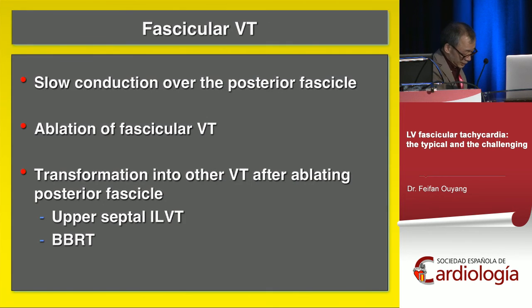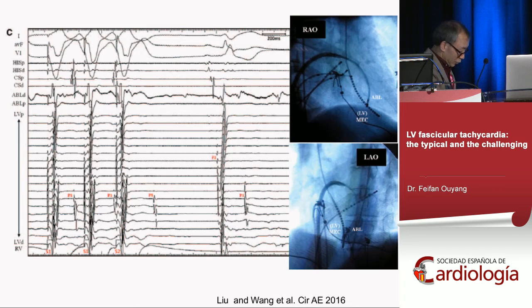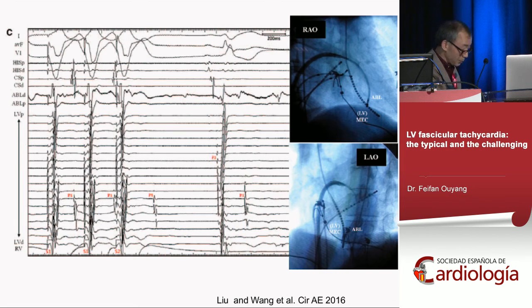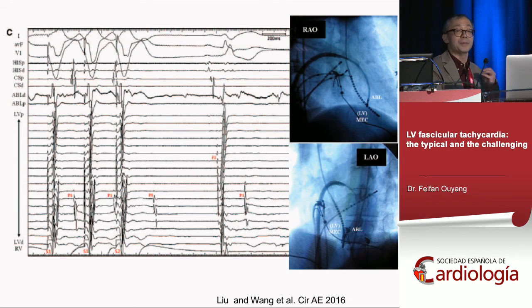So how do you ablate fascicular tachycardia? If you find the decapolar catheter showing the diastolic P1 potential, you burn the junction between P1 and P2 — and ablation terminates the tachycardia. You find the P1 potential, it breaks, disconnecting P1 from P2, and the tachycardia terminates. In some cases — most after mechanical block — the tachycardia cannot be induced anymore. If the tachycardia circuit is in the posterior fascicle, you can create a linear lesion to block the posterior fascicle.